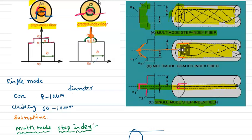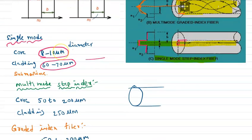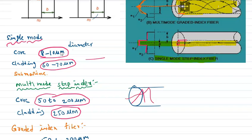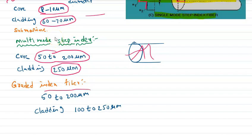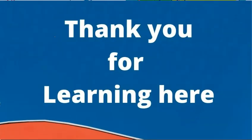In summary: step index fiber has two types — single mode and multi-mode. For multi-mode step index, the core diameter is 50 to 200 micrometers and the cladding diameter is 250 micrometers. For graded index, the core diameter is 50 to 200 micrometers and the cladding diameter is 100 to 250 micrometers. This covers the concept of single mode, multi-mode step index, and graded index optical fibers.